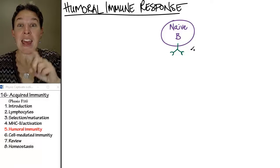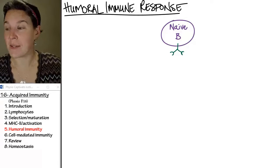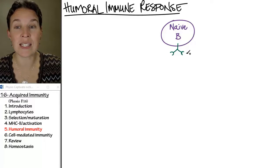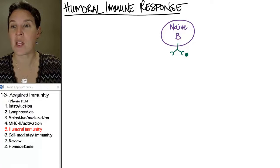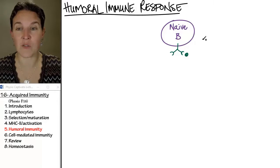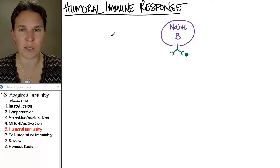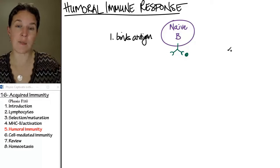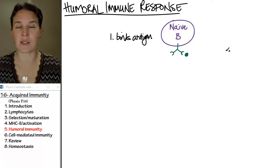Then magic happens, and my little naive B cell runs into its particular antigen. The first thing you can imagine happening: it binds to its antigen. But game over, let's go home because it fixed everything? What's going on?